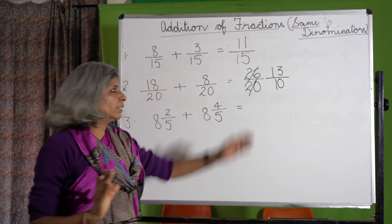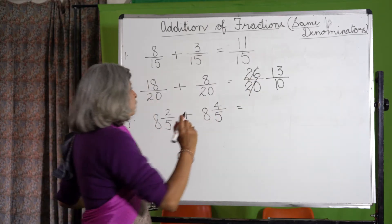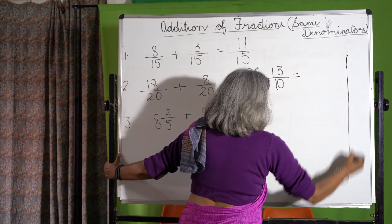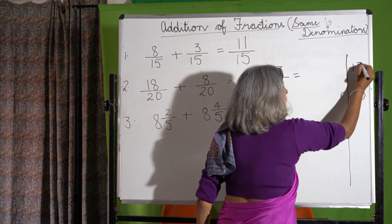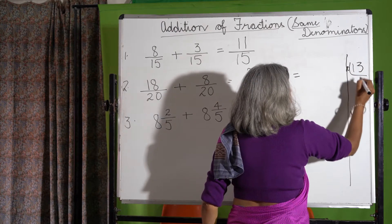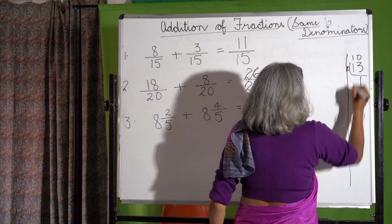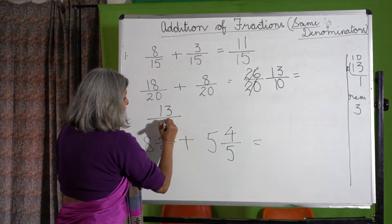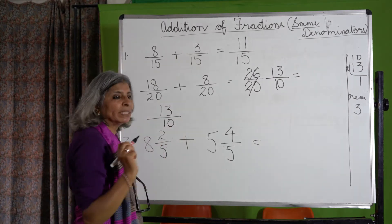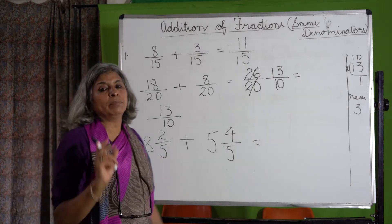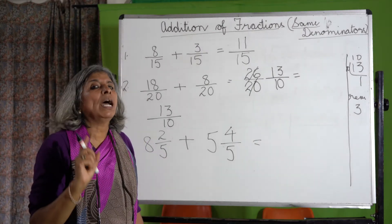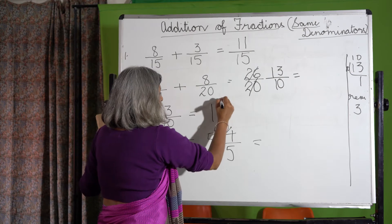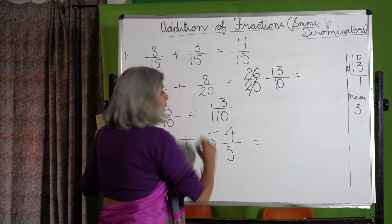As I told you before, we never leave an answer as an improper fraction. So what do we do? We change 13 upon 10. 13 upon 10 means 13 divided by 10. 10 ones are 10, and the remainder is 3. So we change 13 upon 10 into a mixed number. A mixed number has a whole number and a proper fraction. So 13 divided by 10 is 1 and 3 upon 10.